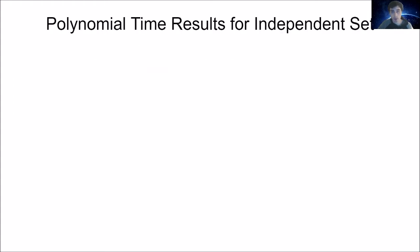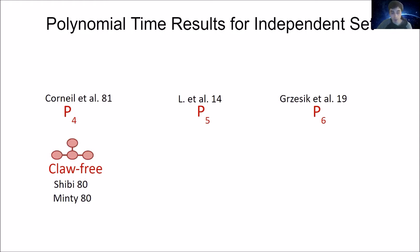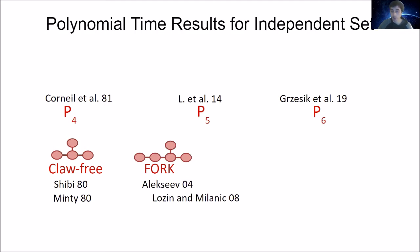Independent set is one of the most important problems this algorithm can solve, so let me recap some polynomial time results. Corneil et al. in 1981 gave a polynomial time algorithm for independent set on P4-free graphs; Lokshtanov et al. in 2014 for P5-free graphs; Grötschel et al. in 2019 for P6-free graphs. For claw-free graphs, Sbihi and Minty simultaneously in 1980 gave polynomial time algorithms. For fork-free graphs, Alekseev in 2004, extended by Lozin and Milanič in 2008 for the weighted case. In 2020, Alekseev et al. gave a polynomial time algorithm for C_{>5}-free graphs.